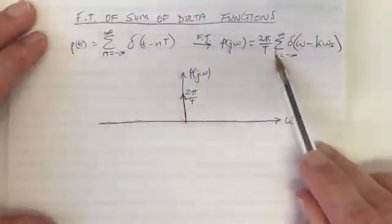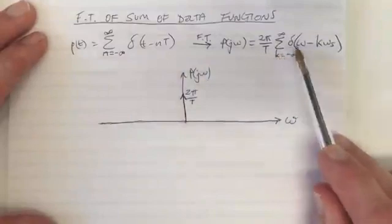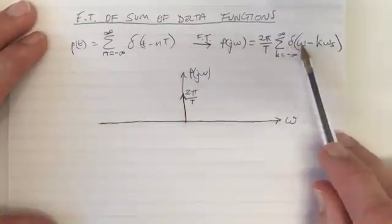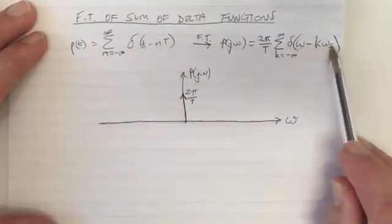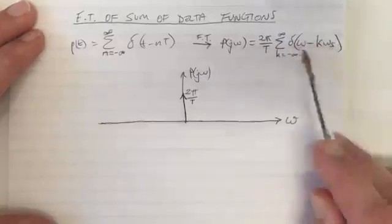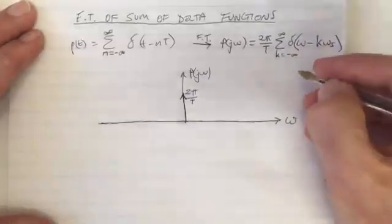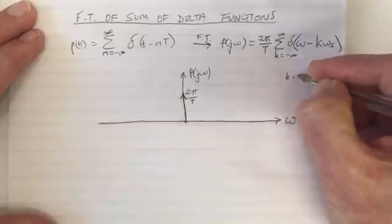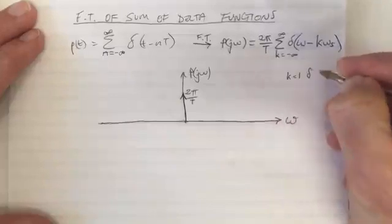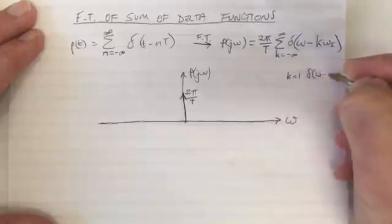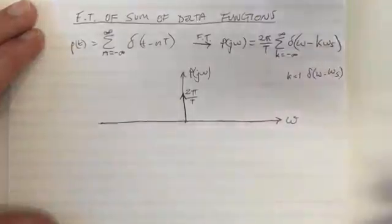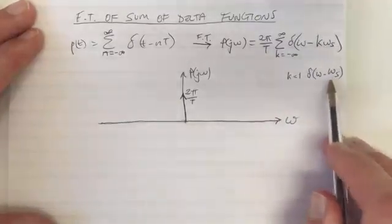Well, what about the element k equals one, for example? Well, k equals one, this is a delta function of ω minus one times ω_s. So for k equals one, the function is δ(ω - ω_s). That's in this case the sampling frequency.